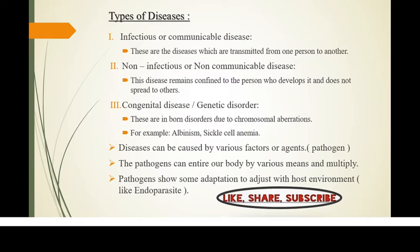The second type is non-infectious or non-communicable disease. These diseases remain confined to a person and are not transferred from one person to another. The third type is genetic disorder — a born disorder due to chromosomal aberration, for example sickle cell anemia.